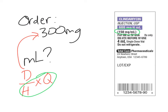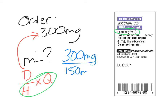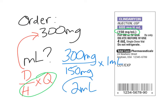In that example, our ordered dose was 300 milligrams. Our dose on hand is 150 milligrams per every one milliliter. To solve this, we would take 300 divided by 150, take that answer and multiply by one, and that would be two. So our answer is going to be two milliliters.